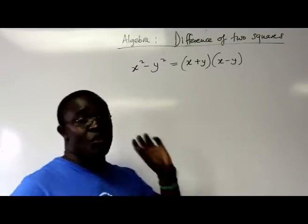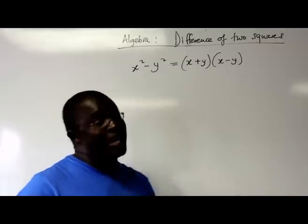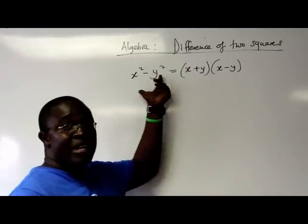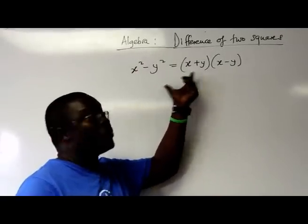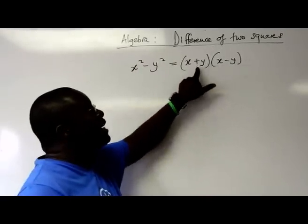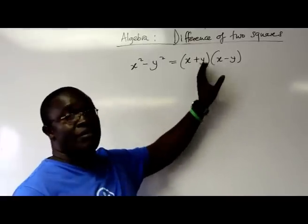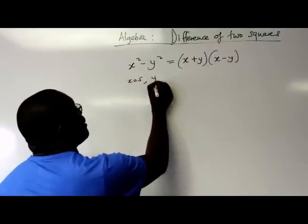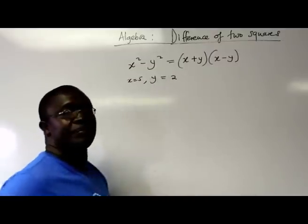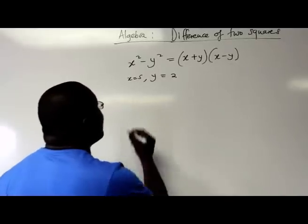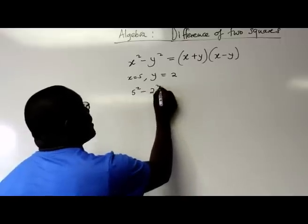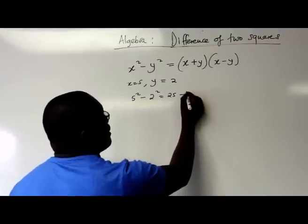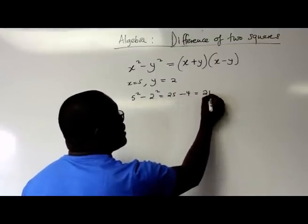It is at your own discretion to be able to identify when this happens. Whenever you have two squares subtracting each other, you know that the plus and the negative — their product will be equal to that. So let's say x is equal to 5 and y is equal to 2, just for argument's sake. So it would be 5 squared minus 2 squared, which is equal to 25 minus 4, and your answer will be 21.